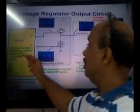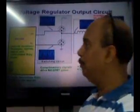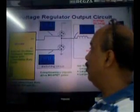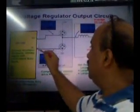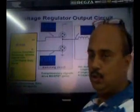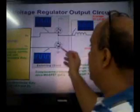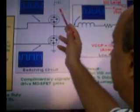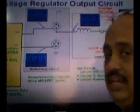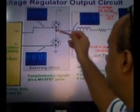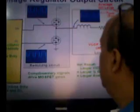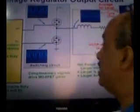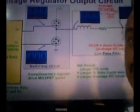Once the VID signal reaches the VRM IC — the CPU Voltage Regulator IC — it drives two pins called Drive High and Drive Low. These two pins drive the gates of two FETs. One FET is connected to the 12V supply, where the 12V reaches the drain and the source comes out at a center point. The other FET has its drain connected at that center point and its source connected to ground. The FET connected to ground is called the Drive Low FET, and the one connected to the supply is called the Drive High FET.